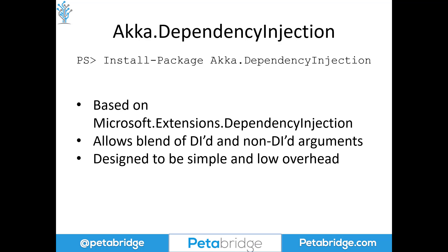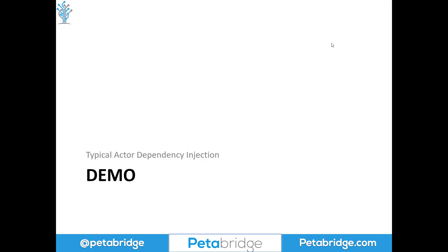This library allows Akka.NET developers to use a blend of injected arguments that are provided by your DI container and non-injected arguments — meaning static arguments that might be specific to a single instance of an actor. This library is designed to be very simple and low overhead. Let's start by taking a look at an example of what typical dependency injection might look like using the akka.dependency injection library.